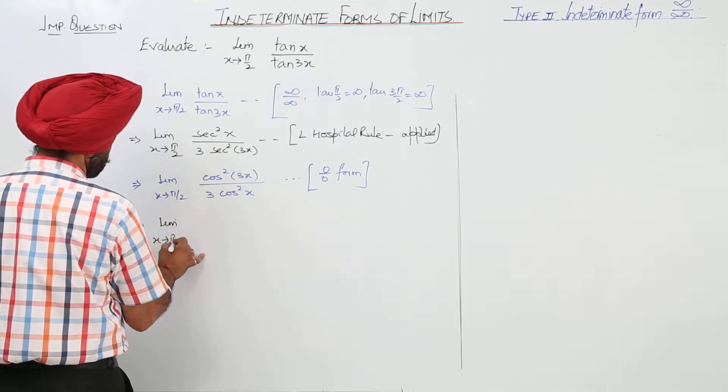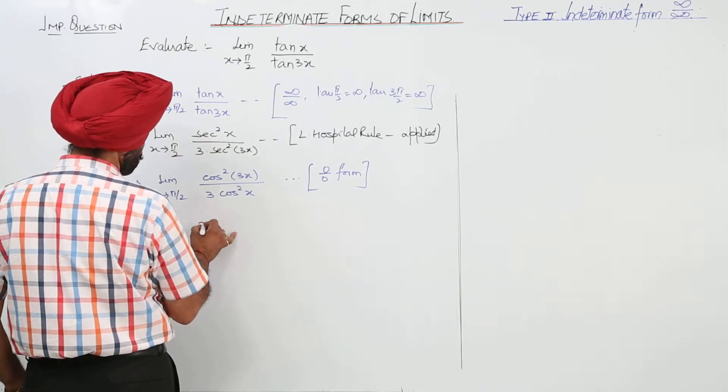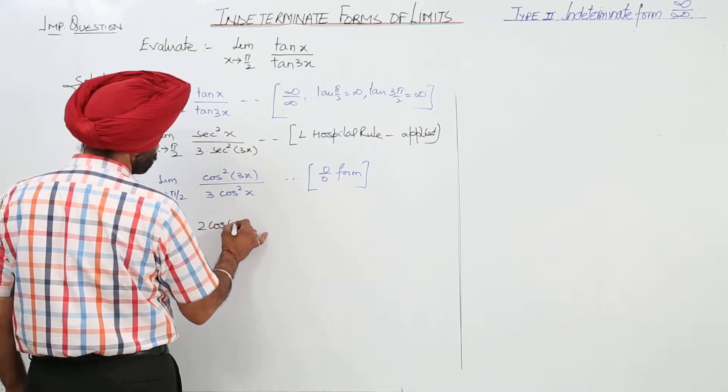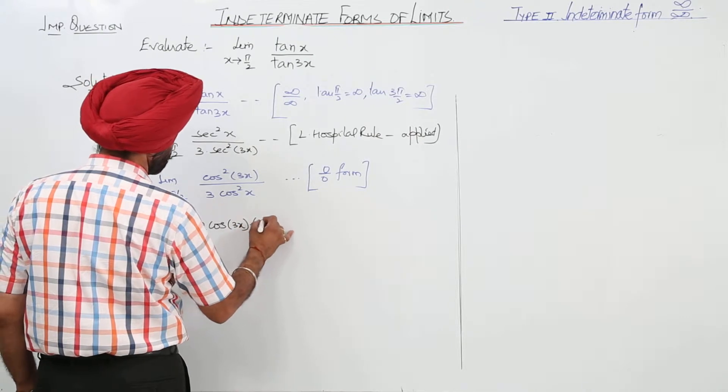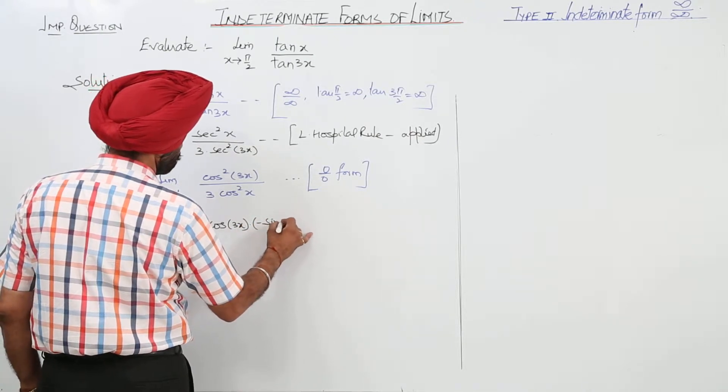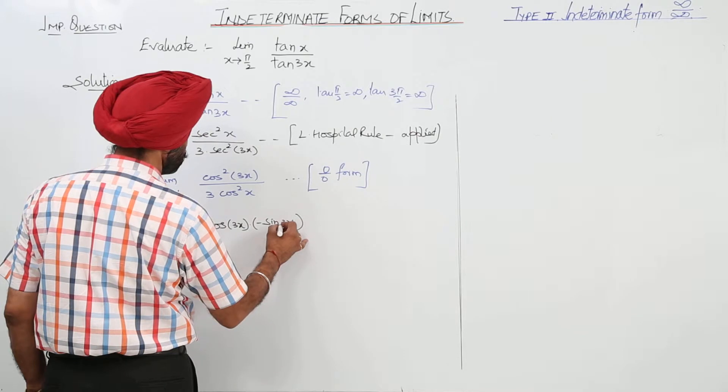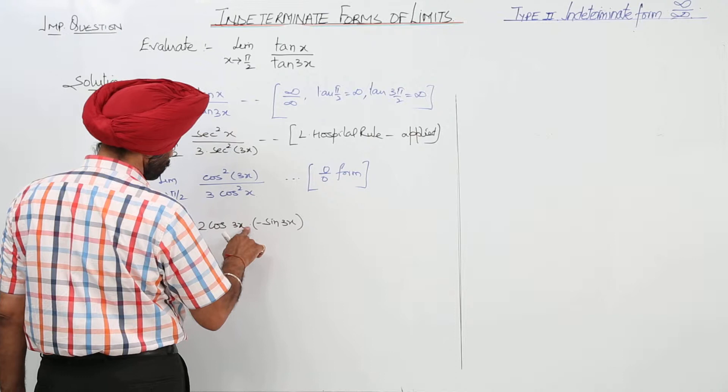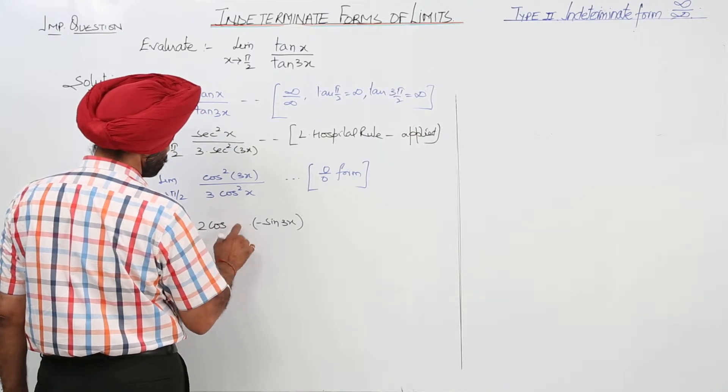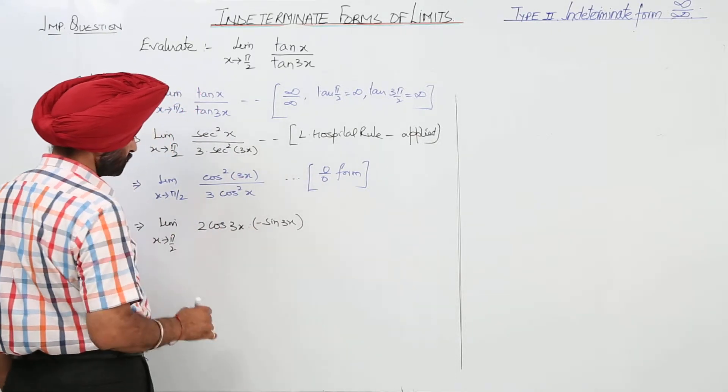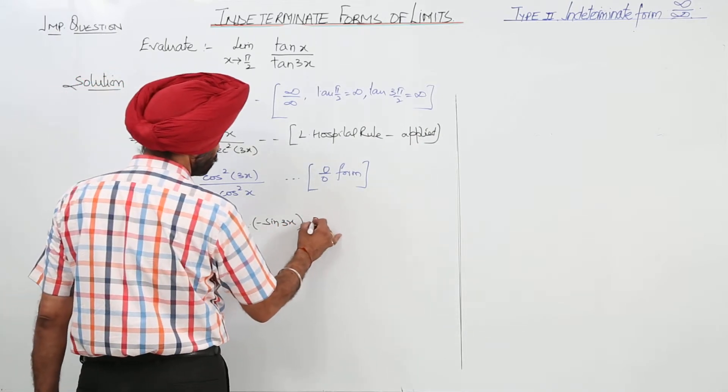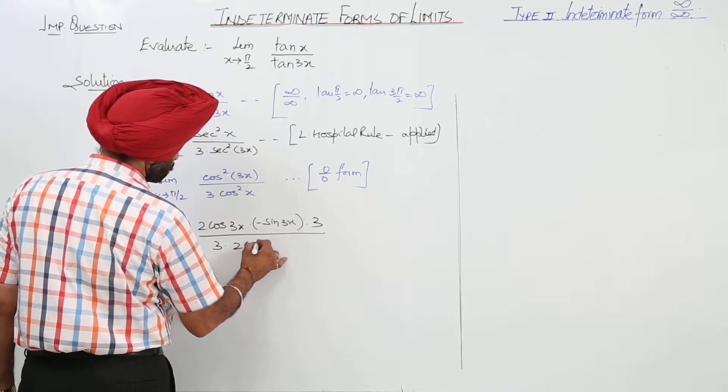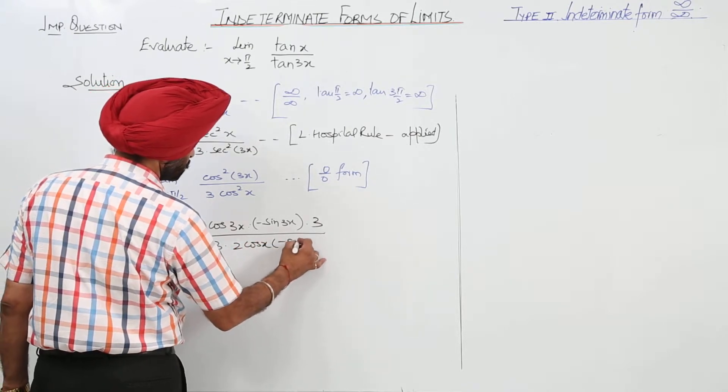Limit x approaches π/2: cos(3x) with negative sin(3x). It can be like this also. You can directly write: 2cos(3x) × negative sin(3x) × 3 upon 3 × 2cos(x) × negative sin(x).